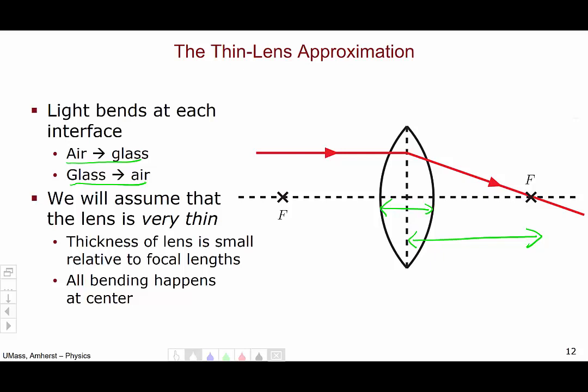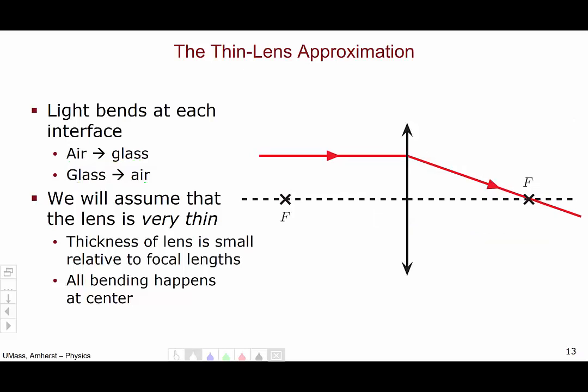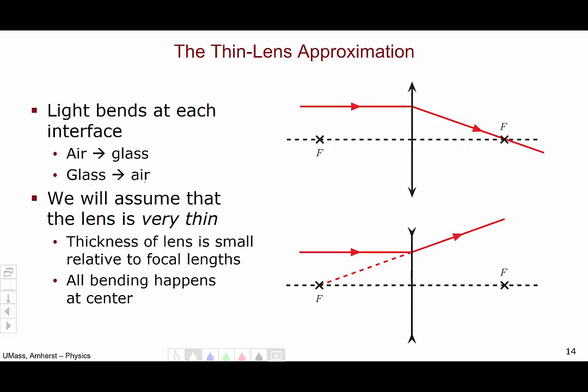For this thin lens approximation, and also because I'm terrible at drawing lenses, I will occasionally represent a converging lens with these types of arrows. And a diverging lens with arrows that point the other way. These arrow tips are supposed to suggest to you the shape of the lenses themselves. So the arrows going as they are on the top sort of suggest a converging lens while arrows that go this way on the bottom suggest a diverging lens.